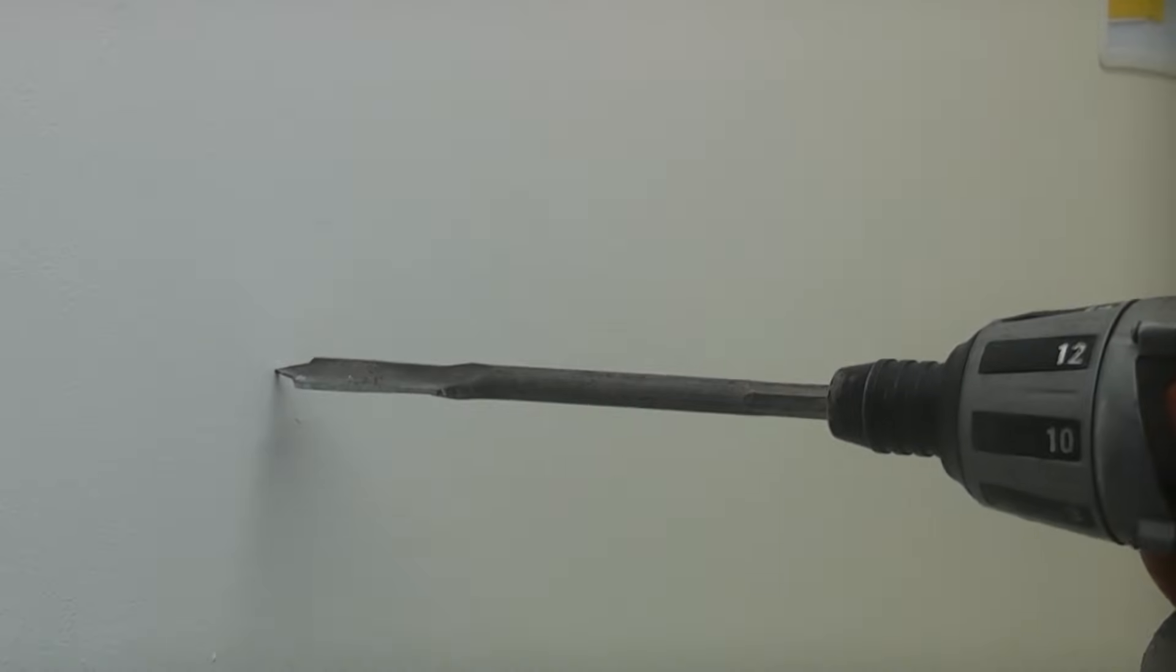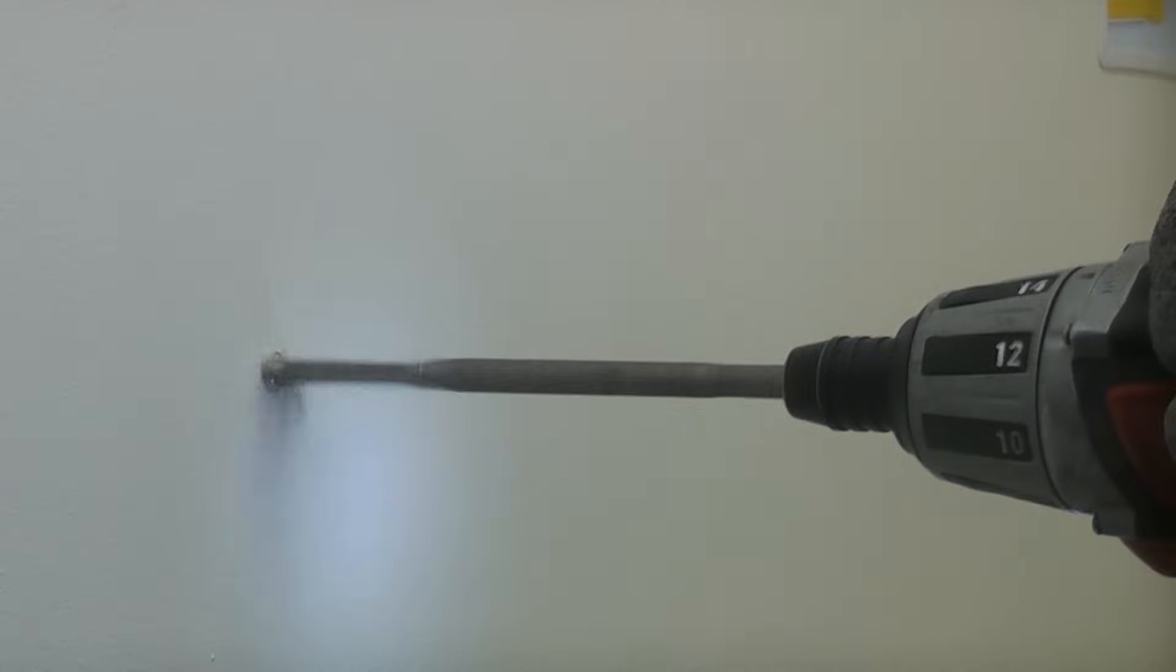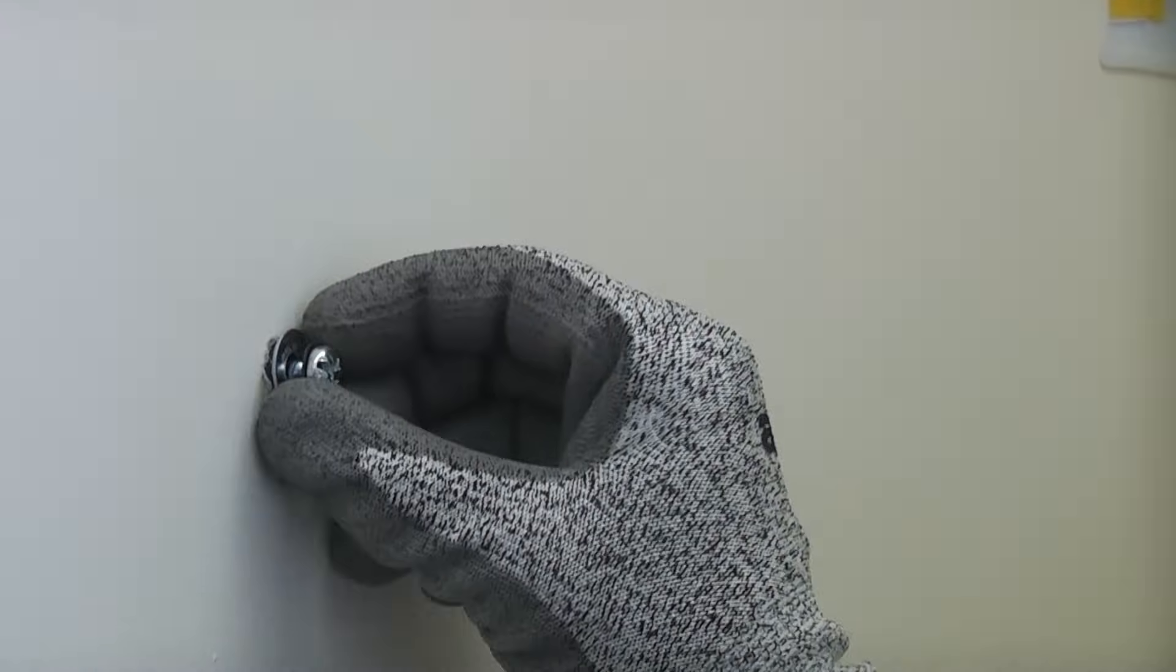I'm going to start off by drilling the correct sized hole in the plasterboard. Once we've done that we can push the anchor through the hole.